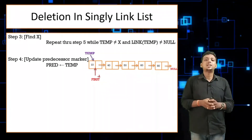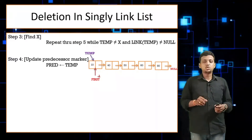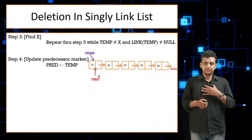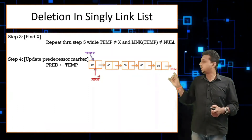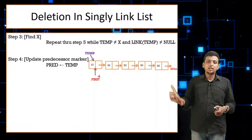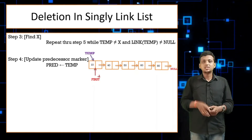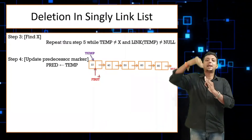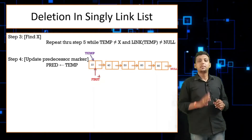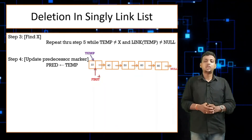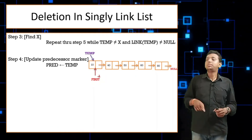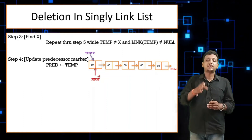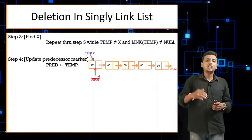Inside the loop, I'm going to take one predecessor pointer. Why? If I want to delete node 60, I need to connect the link of 50 to 80. For that I need the name of 50. If I only have temp pointing at 60, then link of temp gives me 80, but what about 50? So I take another pointer, predecessor, which always follows temp. If temp is at 40, predecessor must be at 10. If temp is at 50, predecessor must be at 40. Predecessor just follows temp.